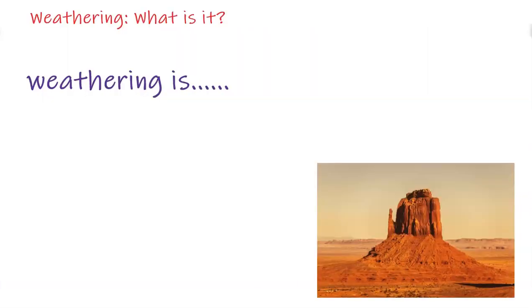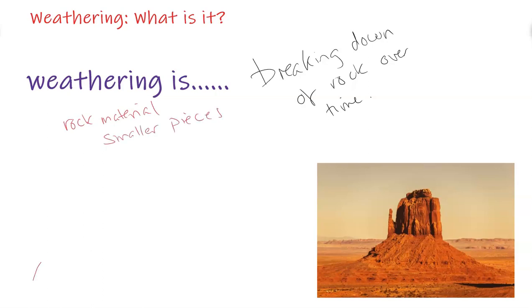So weathering is the breaking down of rock over time. As it's broken down, the rock material is in smaller pieces. So you can have this huge mountain on the Earth's surface, on the crust. It's a huge mountain. And over a long time period, let's just say one million years,